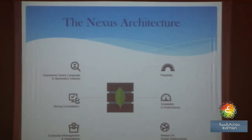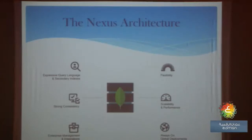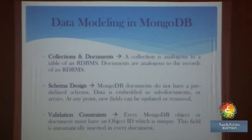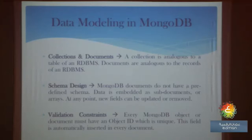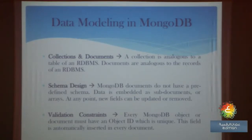Regarding the architecture of MongoDB, the main features are: it is very flexible with a dynamic schema, and it offers incredible scalability and performance — we can have millions of operations per second, particularly for big data. It is always on and supports global deployment. In MongoDB, data is organized in collections, which are similar to tables in RDBMS, and documents are similar to records. There is no predefined schema, so no need to define table structure first. Data is embedded as sub-documents, and columns can be added at any point. Several validation constraints are also supported.